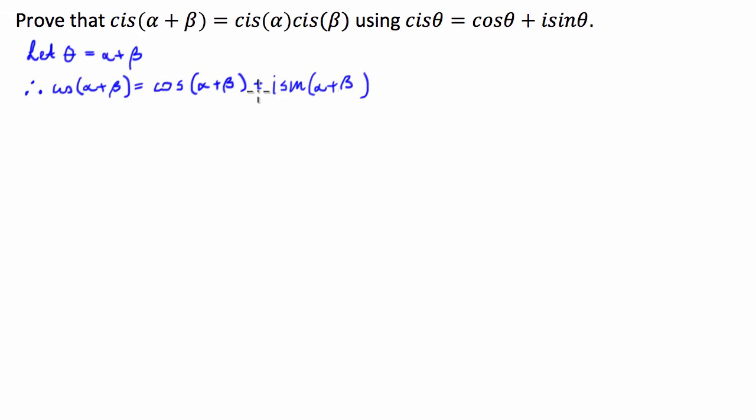From here, we need to use our angle sum formulas, or rather, trigonometric identities. We have cos(a + b) equals cos(a)cos(b) minus sin(a)sin(b), and we also have sin(a + b) equals sin(a)cos(b) plus cos(a)sin(b).